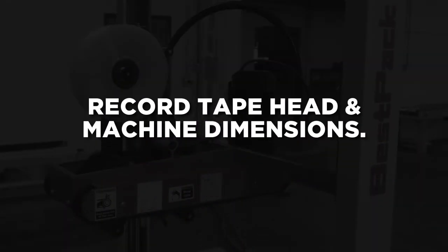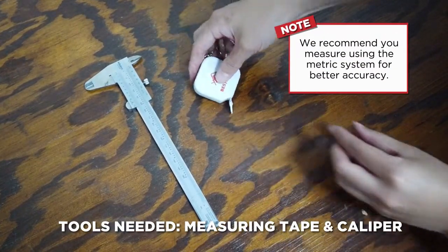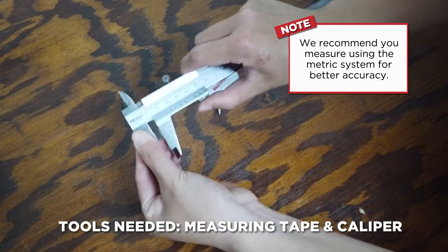Now it's time to record your tapehead and machine dimensions. In this demonstration, we will be using two types of measuring tools: a measuring tape and a caliper.